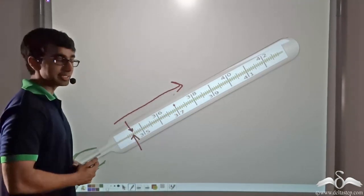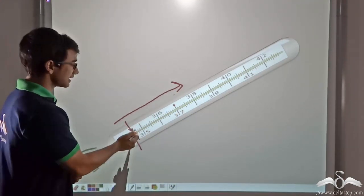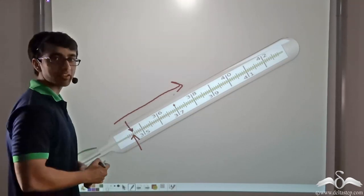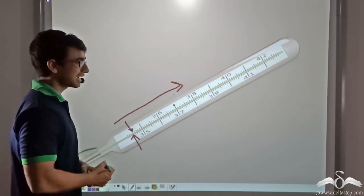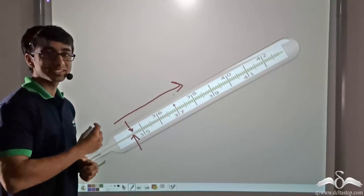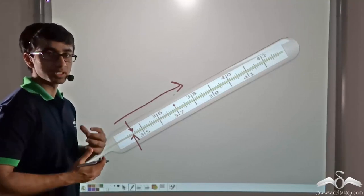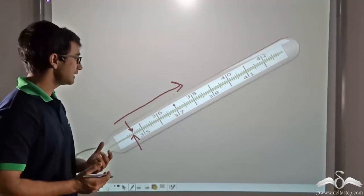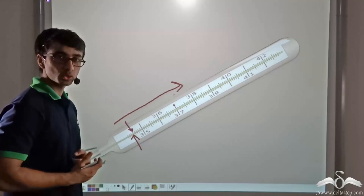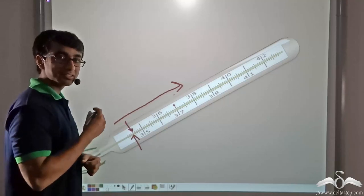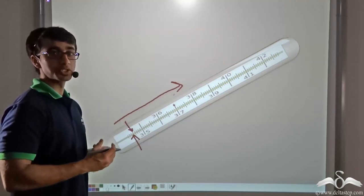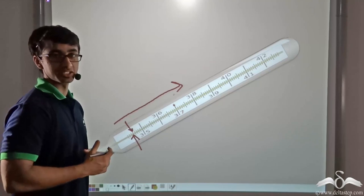On the sides of this filament there are certain numbers that have been marked and certain scales. With the help of these scales, numbers, and the height to which the liquid column rises, we can find out what is the temperature of the body which we are measuring.